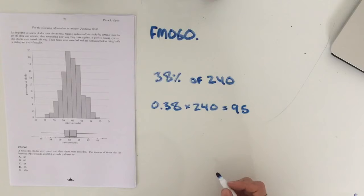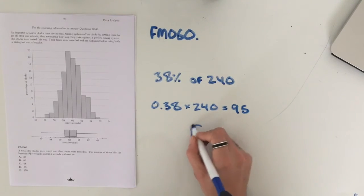So, 95 of the clocks should fall between 59.5 and 60.5 seconds, which gives our answer as D.